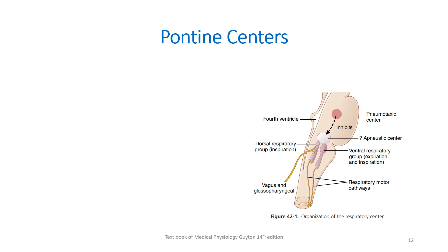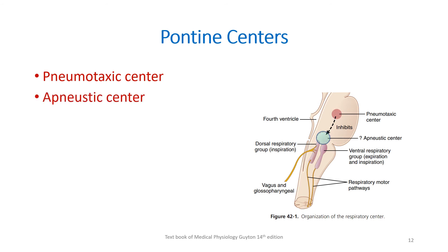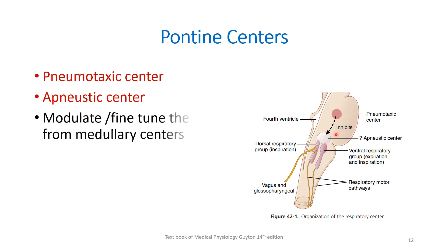Moving on to the pontine centers, there are two groups of neurons: the pneumotaxic center and the apneustic center. They modulate and fine-tune the output from the medullary centers. Basically, the signals originate from the medullary centers and are modulated by these pontine centers.